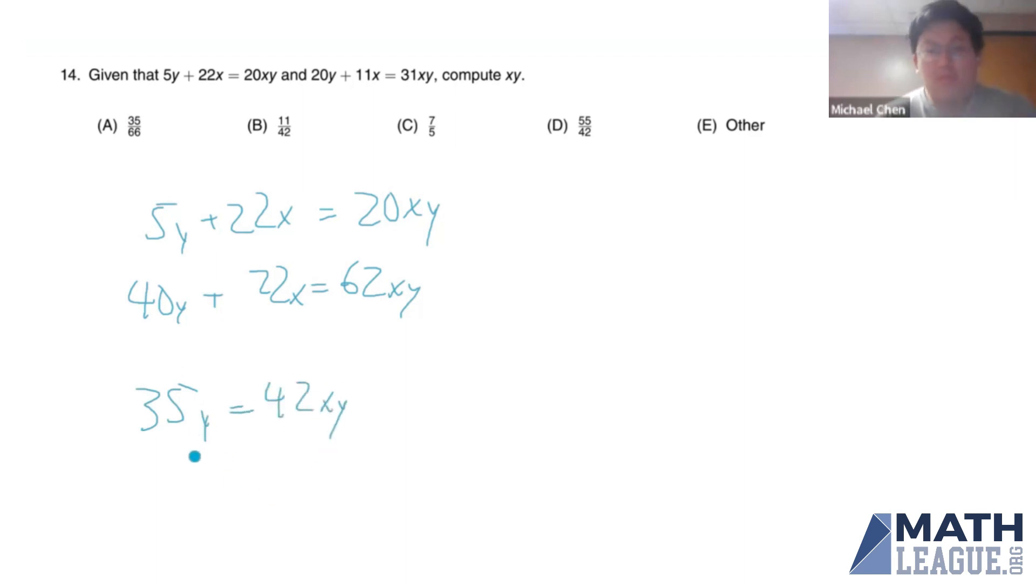And assuming that y is not equal to 0, then we get that x is equal to 5 sixth.